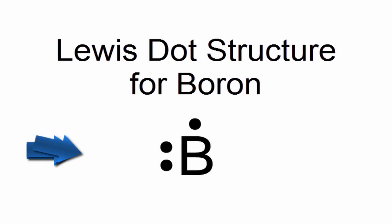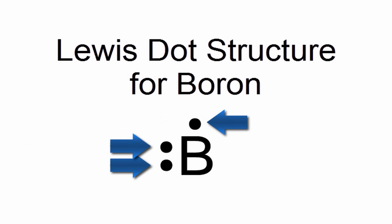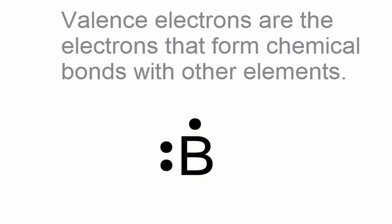Boron is in group 13 or 3A. That means it has three valence electrons, so we'll take and put those valence electrons right next to the element symbol, B, for boron.